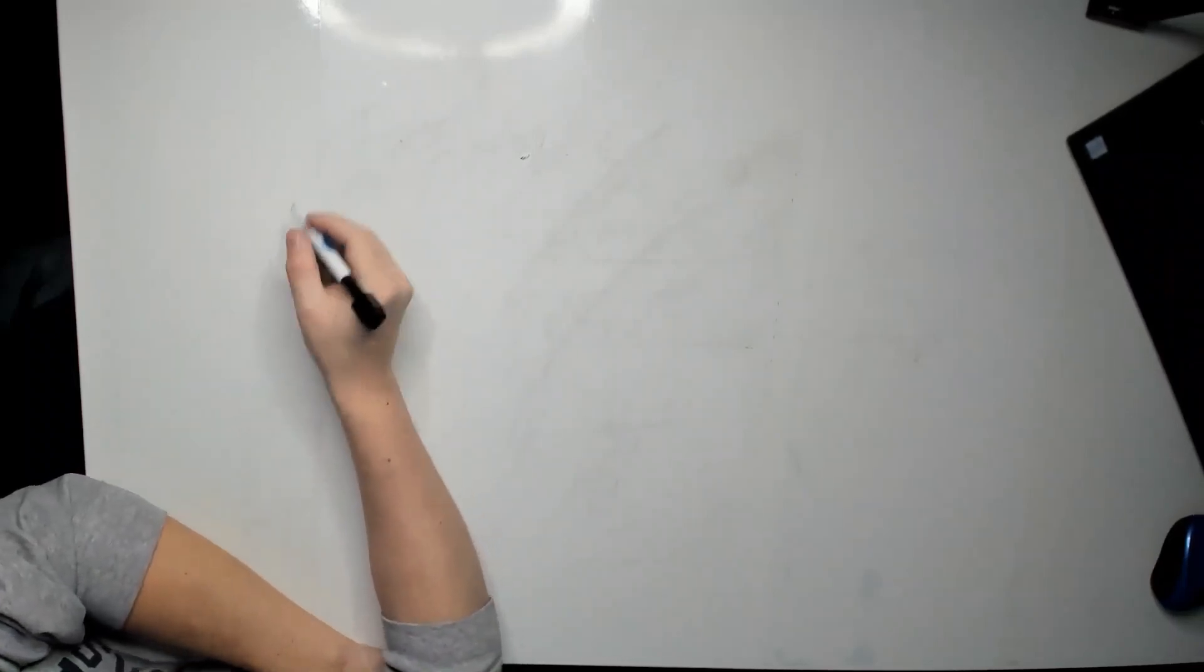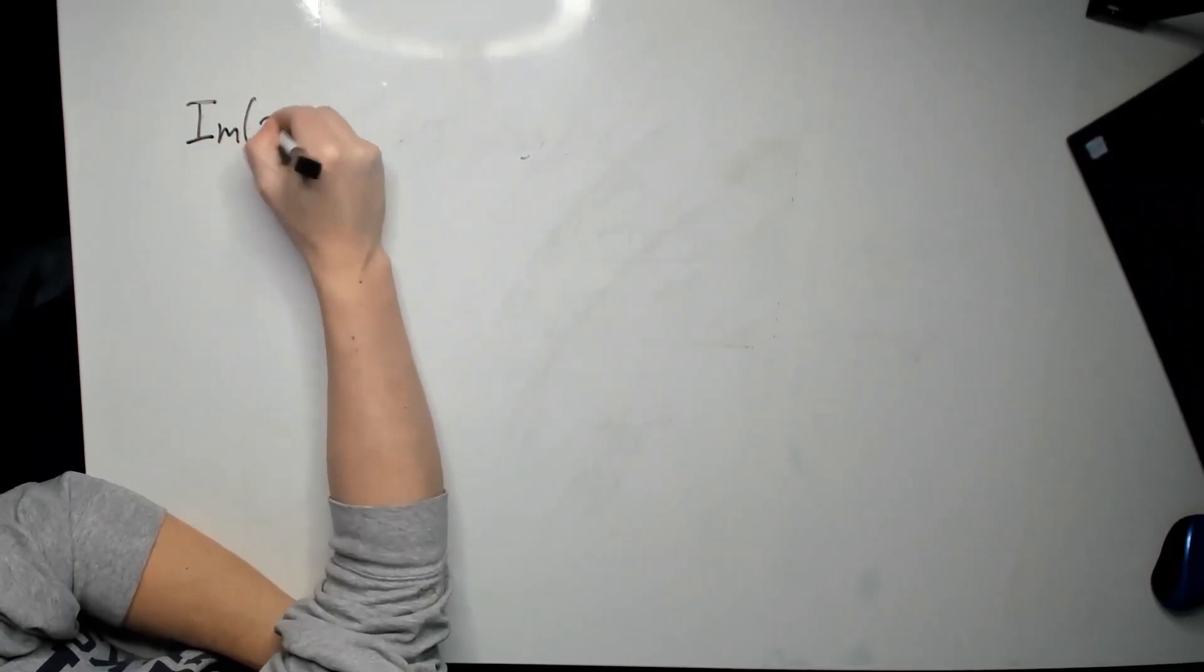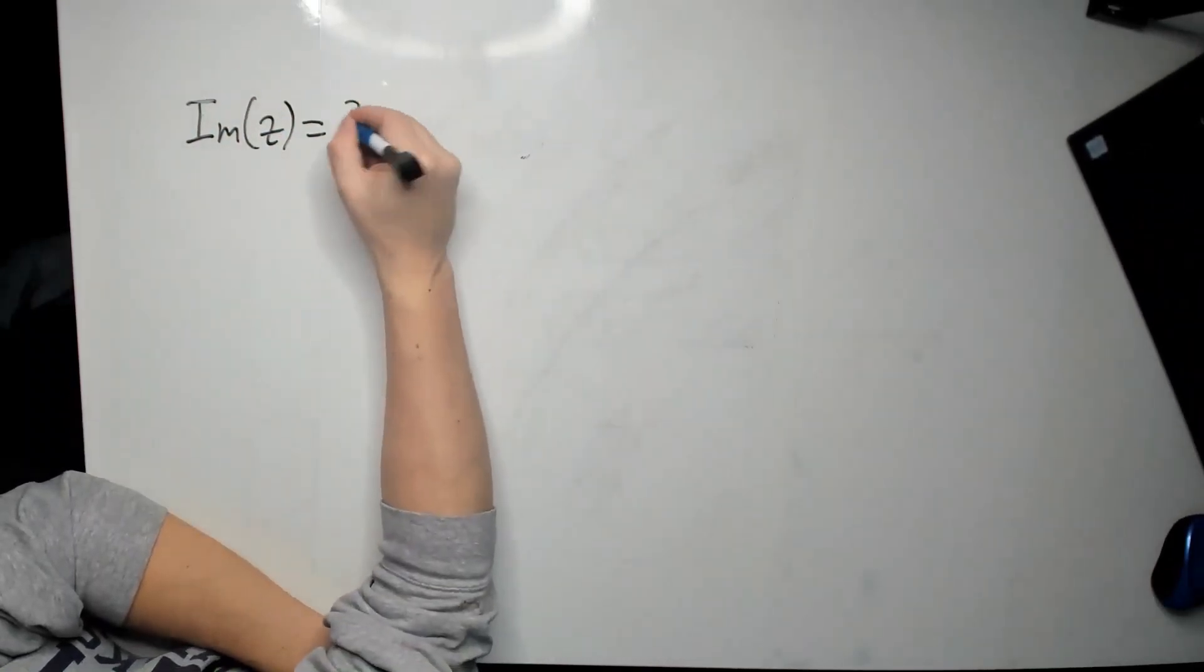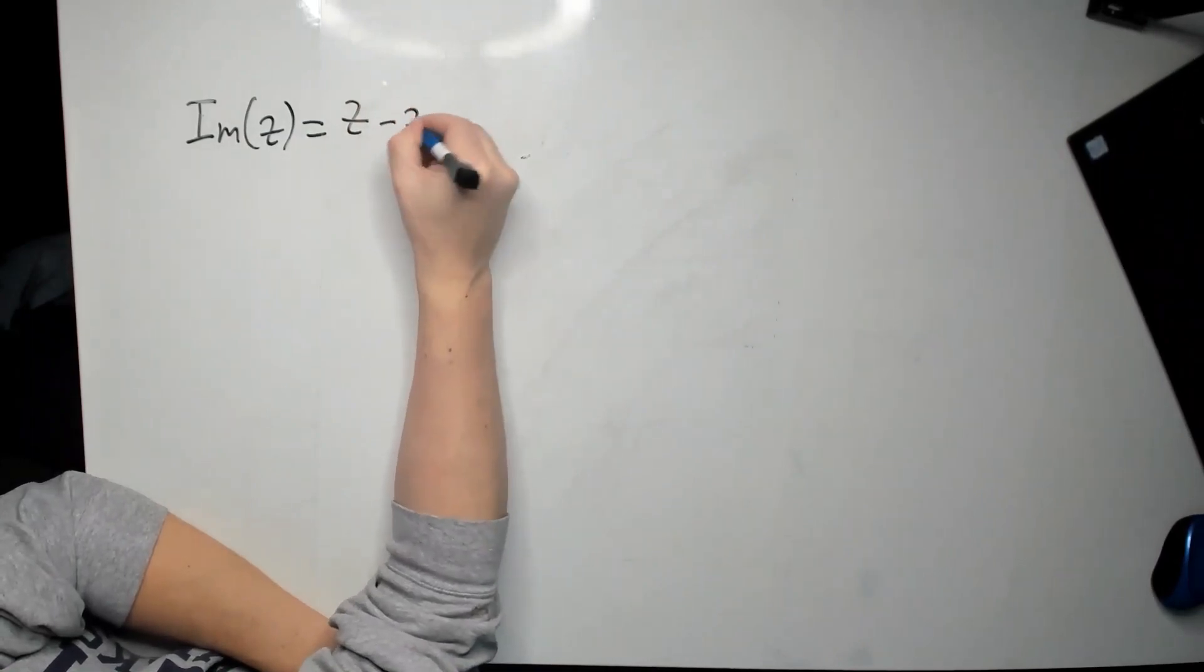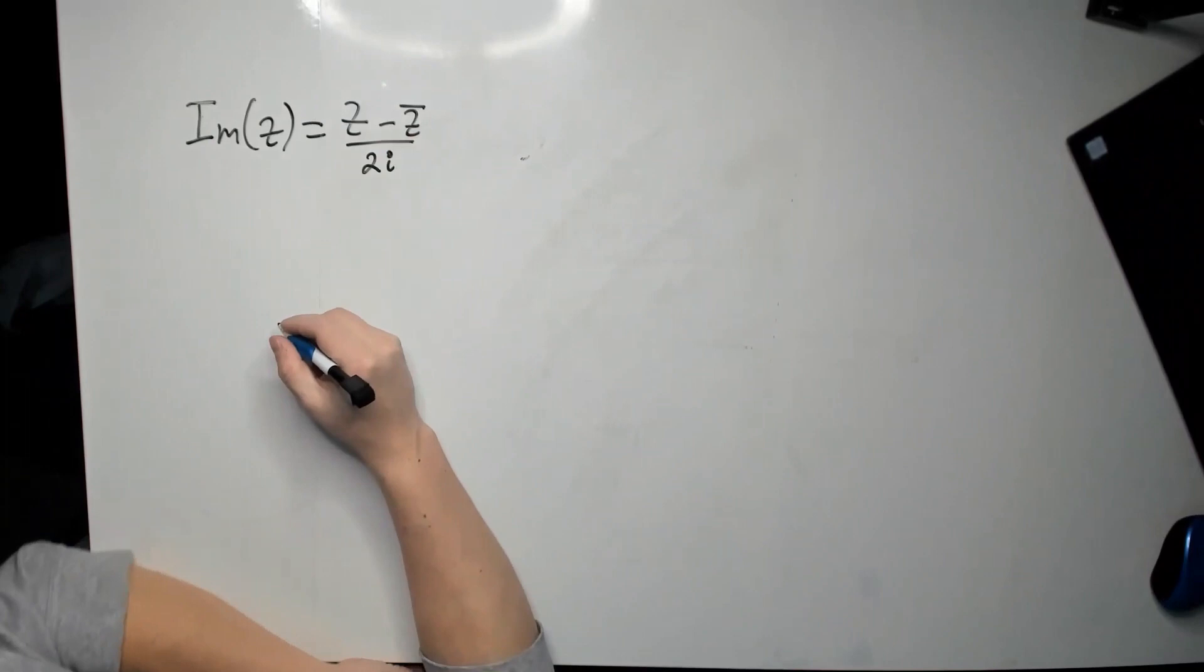I just want to convince ourselves that the following is true. The imaginary part of a complex number z is defined to be, or you can find it by doing z minus z bar divided by 2i. So let's go and actually confirm this.